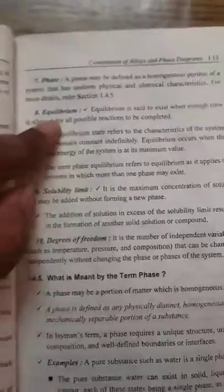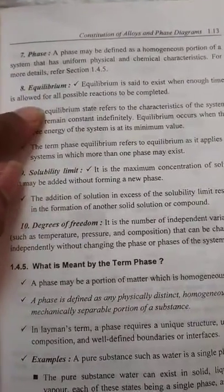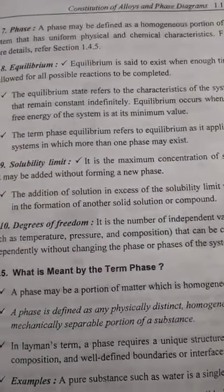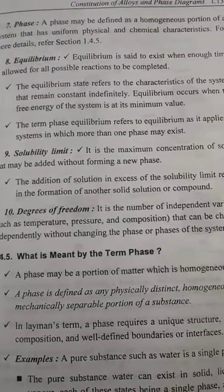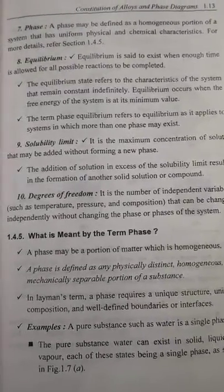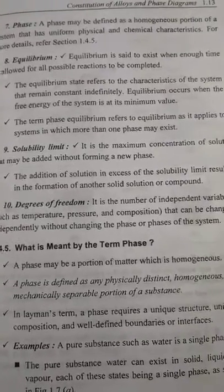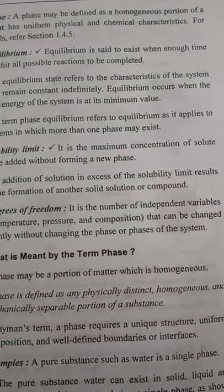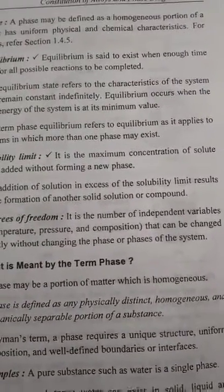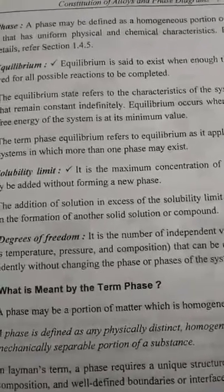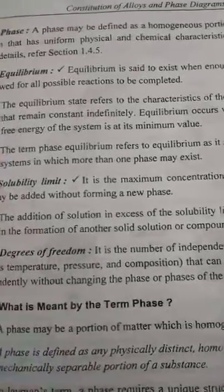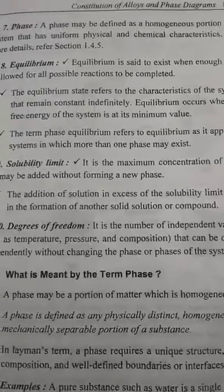Equilibrium is said to exist when enough time is allowed for all possible reactions to complete. The solubility limit is the maximum concentration of solute that may be added without forming a new phase. For example, if you take a glass of water and keep adding salt, at a certain point the salt dissolves well, but beyond a particular point, adding more salt will not dissolve — that limit is the solubility limit.